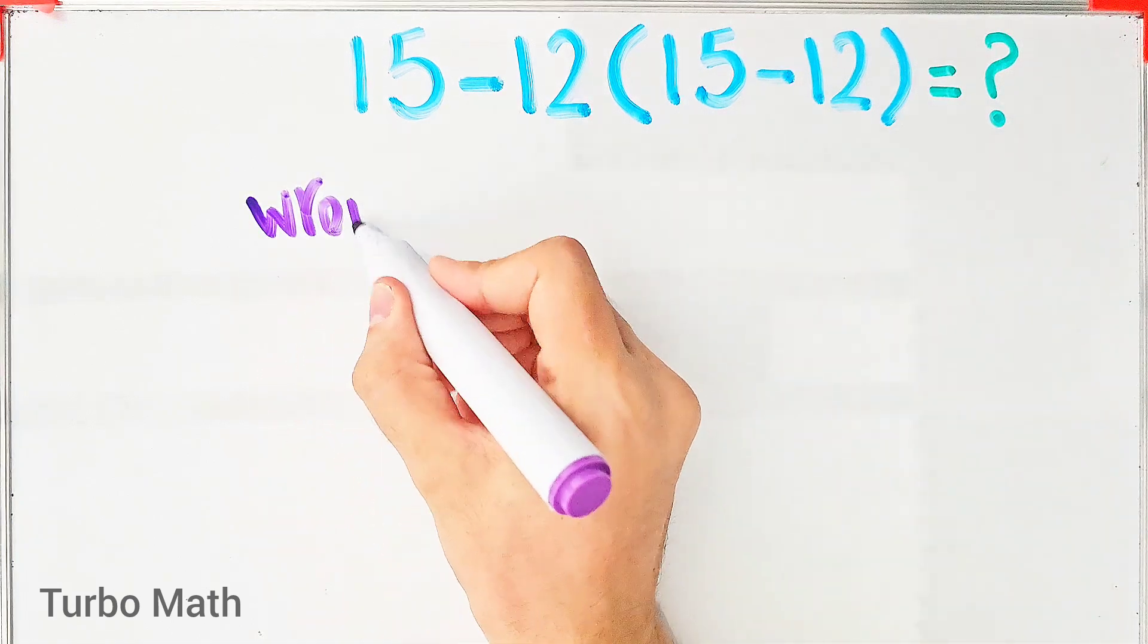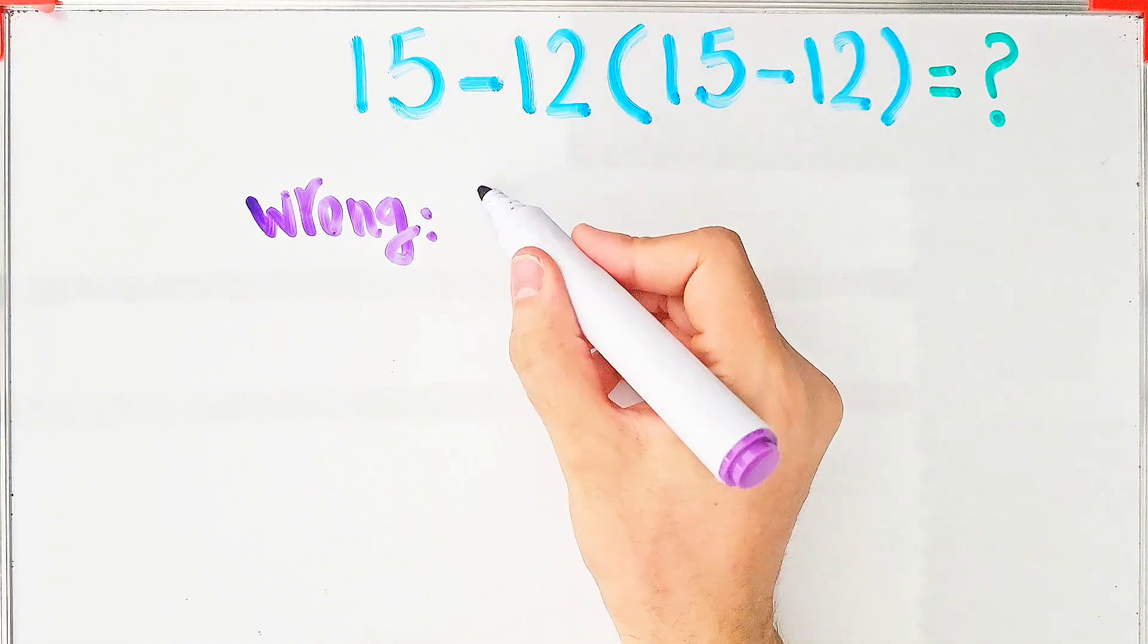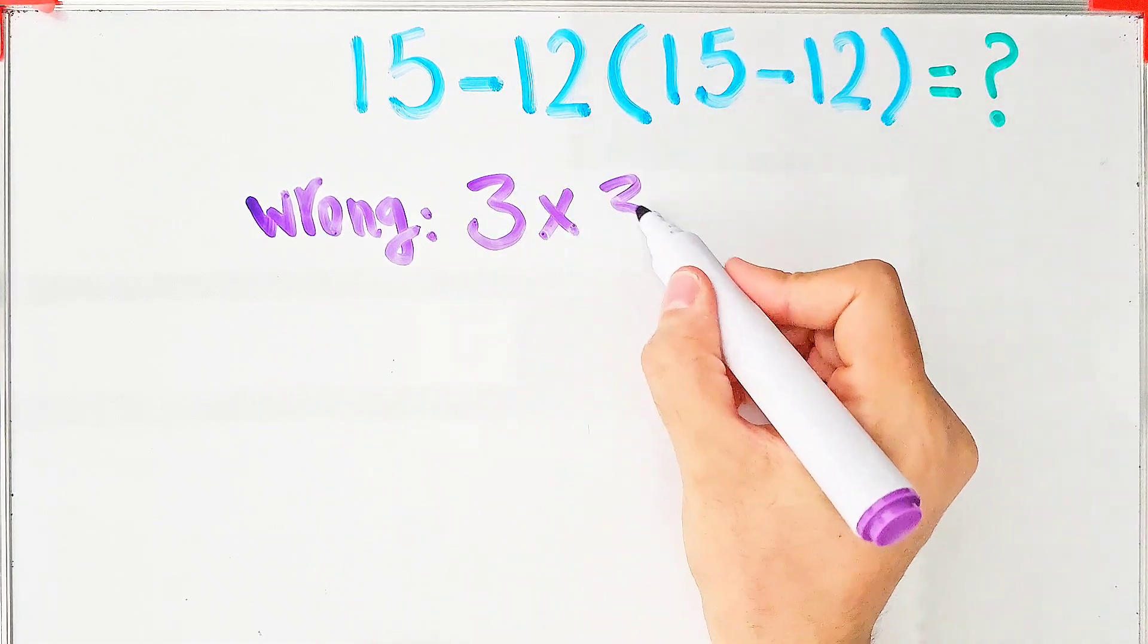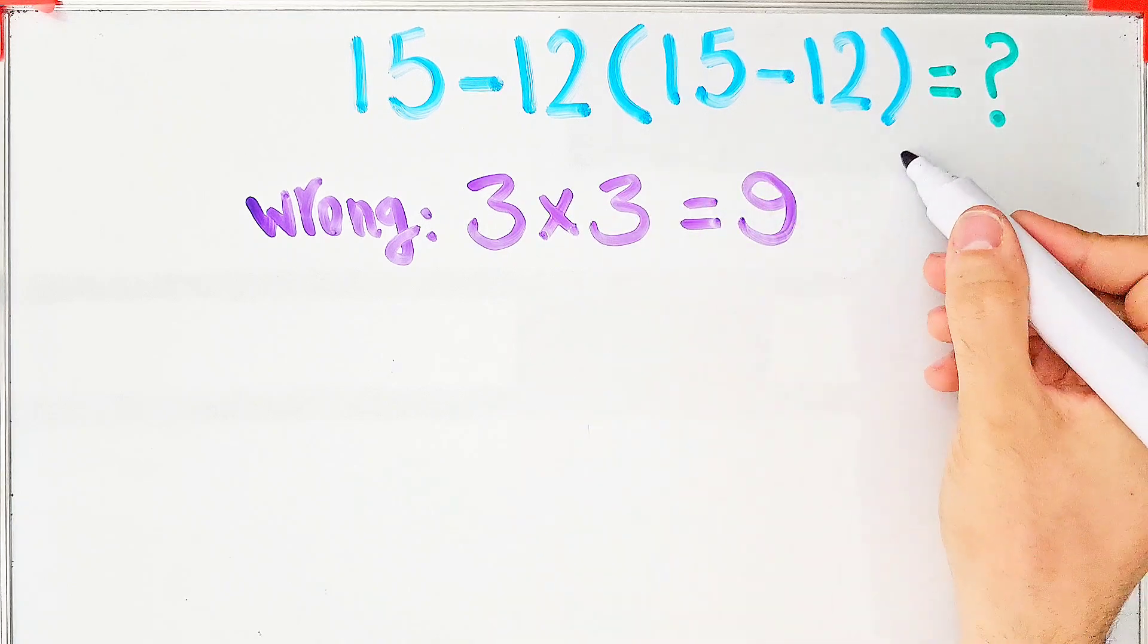In the wrong way of solving this question, some people solve this question like this: 15 minus 12 equals 3, 3 times 15 minus 12 that equals 3, and the final answer of this question equals 9.